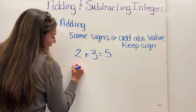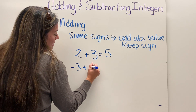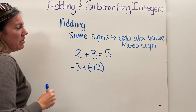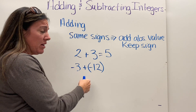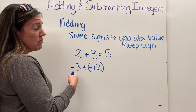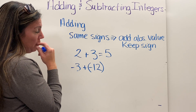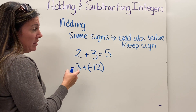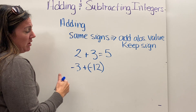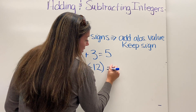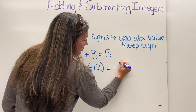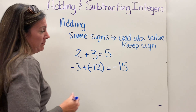Now if I have something like negative three plus negative twelve, I think about their absolute values. The absolute value of negative three is three, and the absolute value of negative twelve is twelve. If I add those together, three and twelve gives me fifteen, and because they're both negative it ends up being negative fifteen.